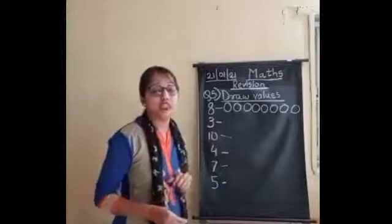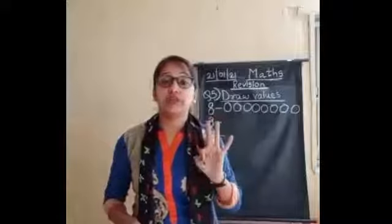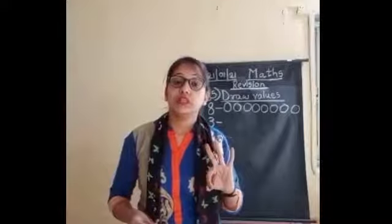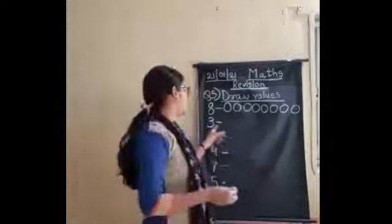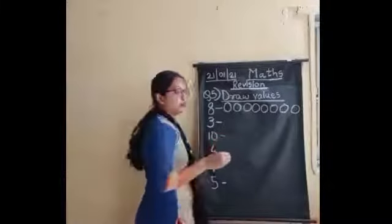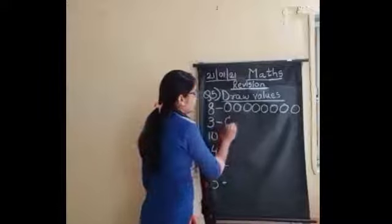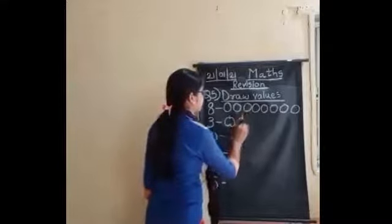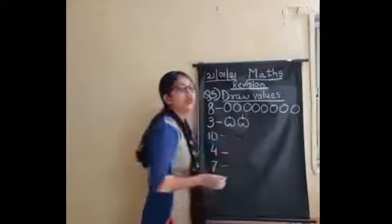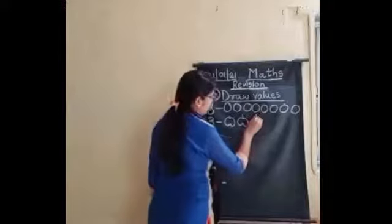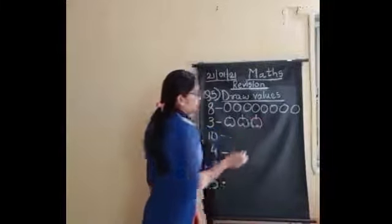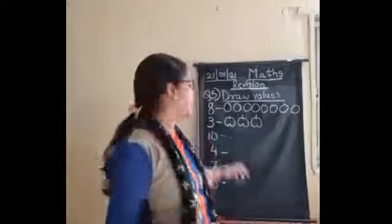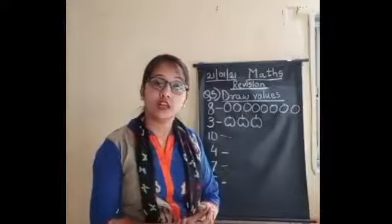Now the next one is 3. Which number is this? 3. So what we have to do? We have to make 3 values. So here we will use apple — we will make 3 apples: 1, 2, 3. How many? 3 apples. We have made 3 apples. Aap ko bhi aise hi draw karna hai.